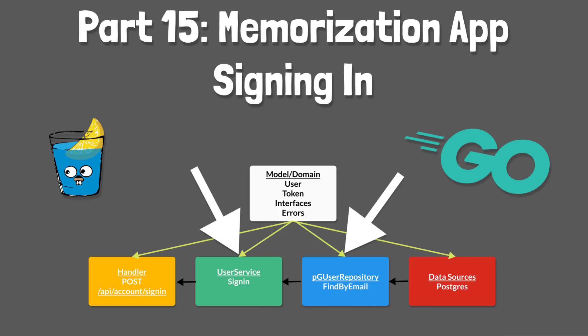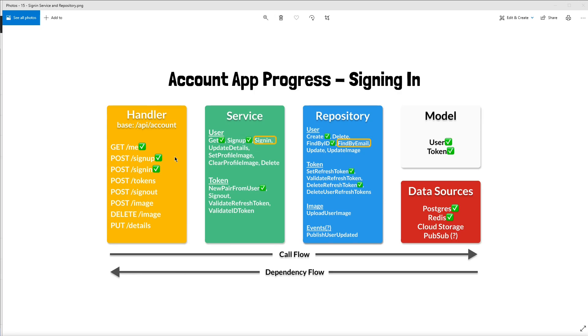Thanks for joining me again today for another account tutorial. Last time we created and tested a handler for signing in a user. This handler accepts and validates an email and password in a JSON request body. Let's take a look at our progress diagram to see what we'll work on today. We're going to add the ability to sign in the user from the service layer and the repository layer. Recall that last time we created this post sign-in handler.